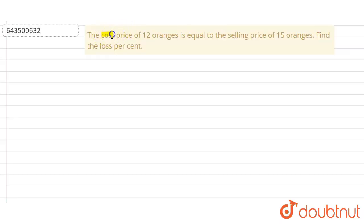In which they gave us the cost price of 12 oranges is equal to the selling price of 15 oranges. So we have to find out the loss percentage here. Let me take, let the cost price of each orange...